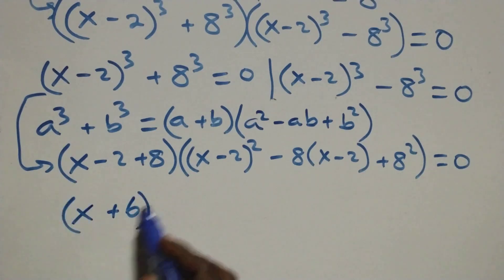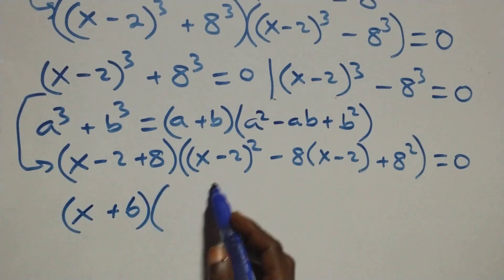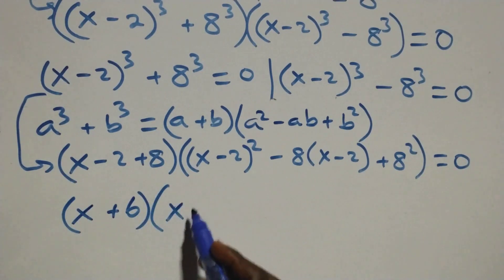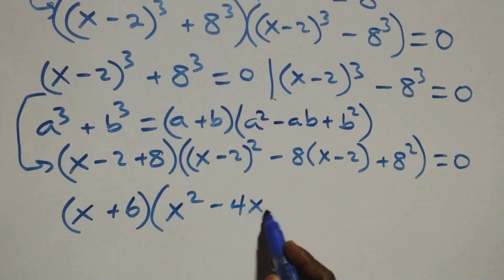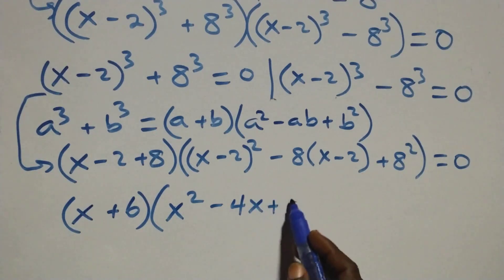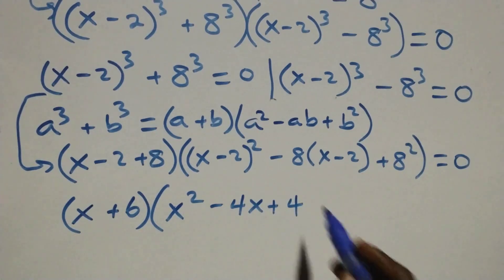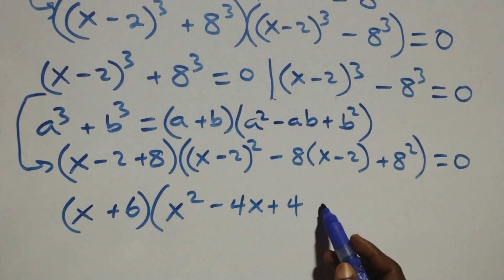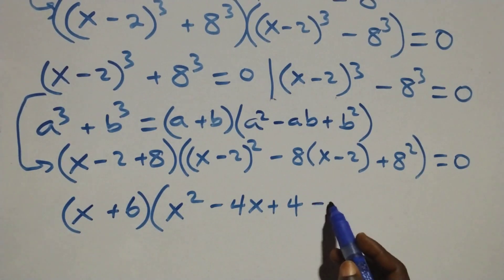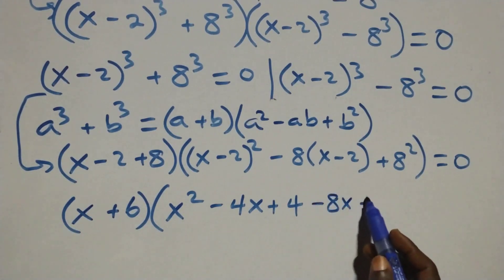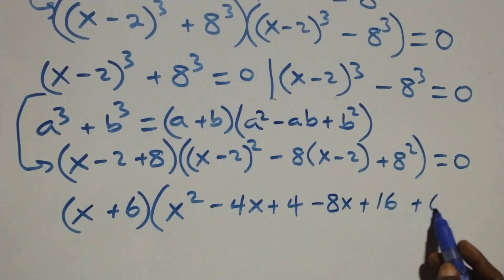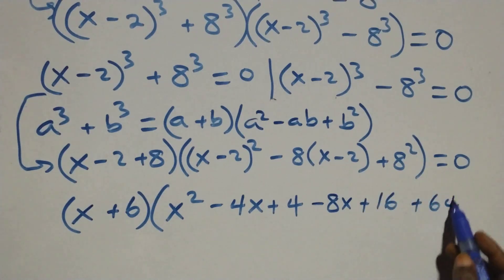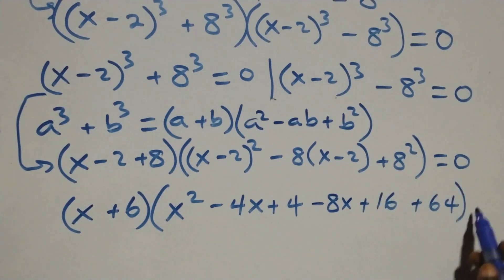Closing that bracket and opening the next, expanding (x − 2)² gives x² − 4x + 4. Then minus 8 times (x − 2) gives minus 8x plus 16. Then plus 8 squared, that's 64. All equals 0.